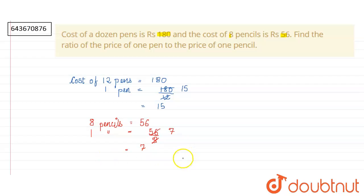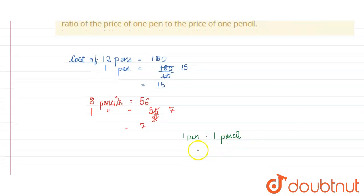Now when we find the ratio of cost of 1 pen to 1 pencil, this will be equal to cost of 1 pen is Rs. 15 and cost of 1 pencil is Rs. 7. So this is equal to 15 to 7. This is our ratio obtained.